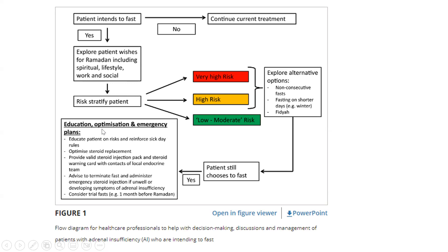In general, education, optimization, and an emergency plan should be put forward. We should always educate the patient on the risk and reinforce the sick day rules — basically increasing the steroid dose when the patient is sick. Optimize their steroid replacement. Always provide them with a valid steroid injection pack, like intramuscular hydrocortisone, and a steroid warning card with contacts of the local endocrine team. Advise patients that they should terminate the fast and administer emergency steroid injection if they feel unwell or are developing symptoms of adrenal insufficiency. Plan well ahead and consider a trial fast, ideally one month before Ramadan.